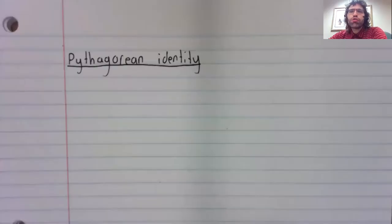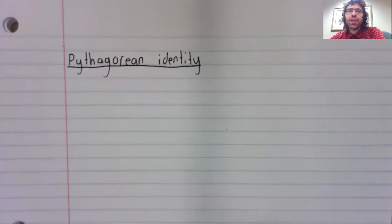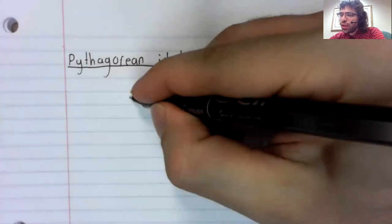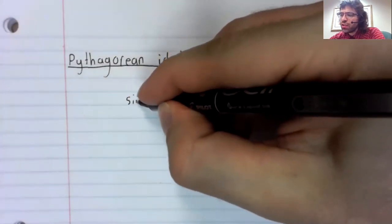No judgment. I've forgotten most of them too. One identity that you should know is the Pythagorean identity. This shows up often enough that you should try to get it into your long-term memory.